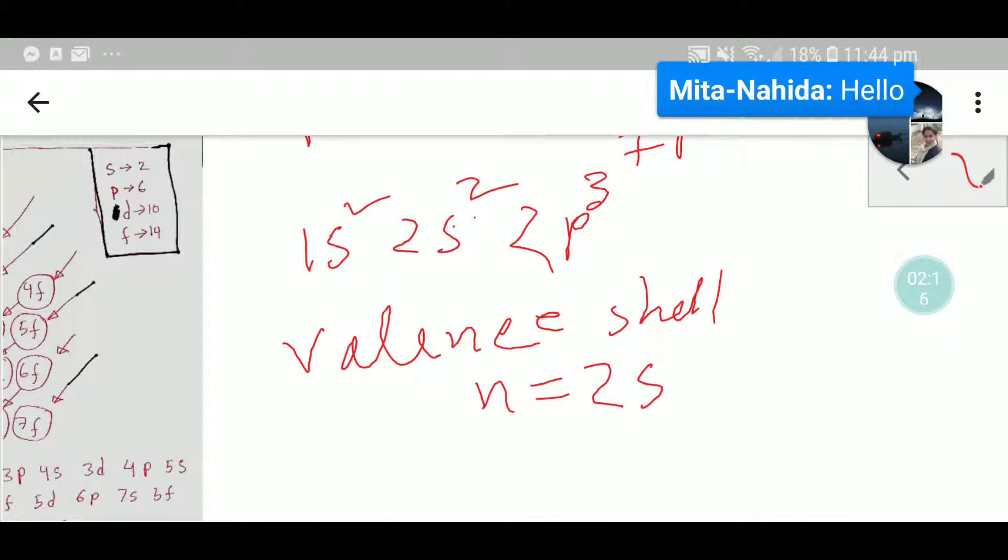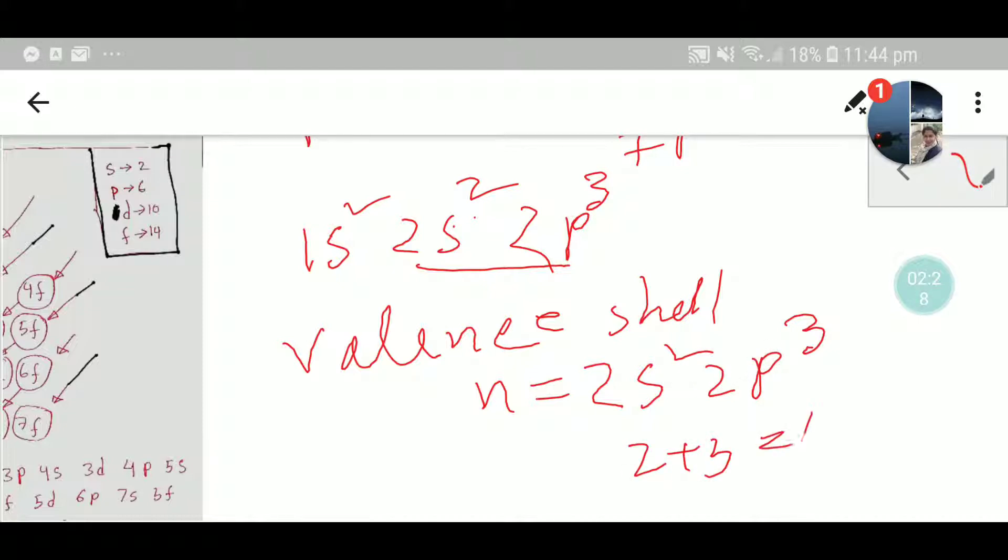So here we have 2s2 and 2p3. This is the valency shell. In the valency shell we have 2 plus 3, that is five valence electrons. So nitrogen has five valence electrons.